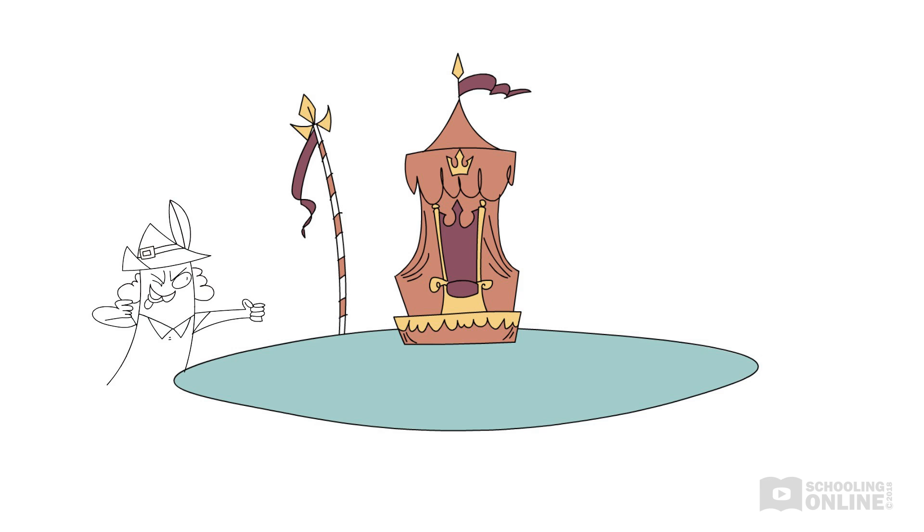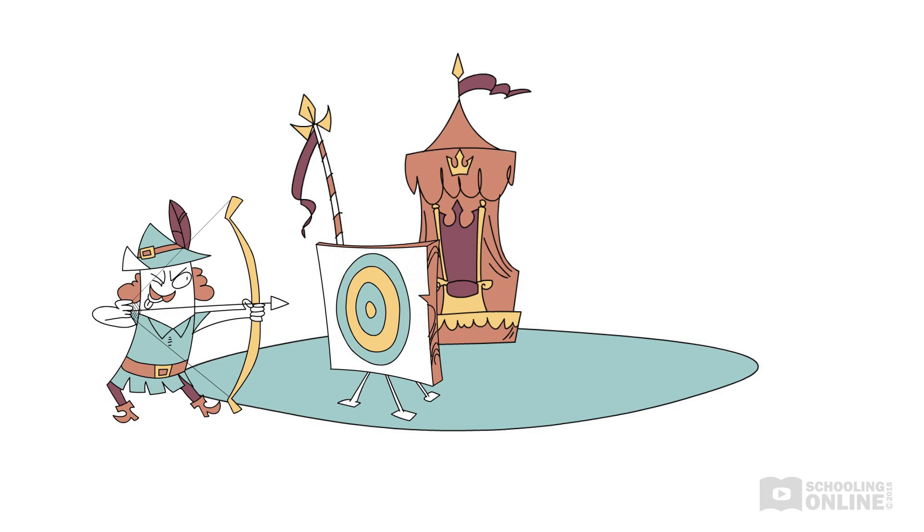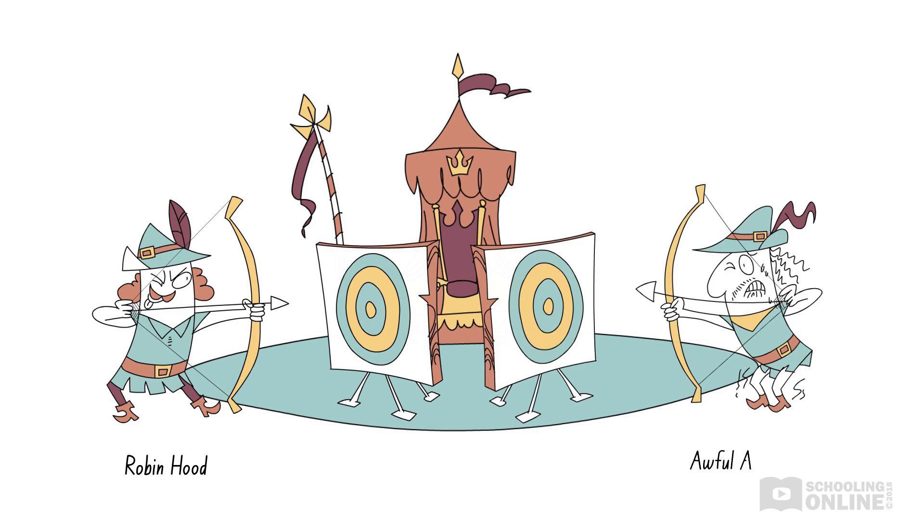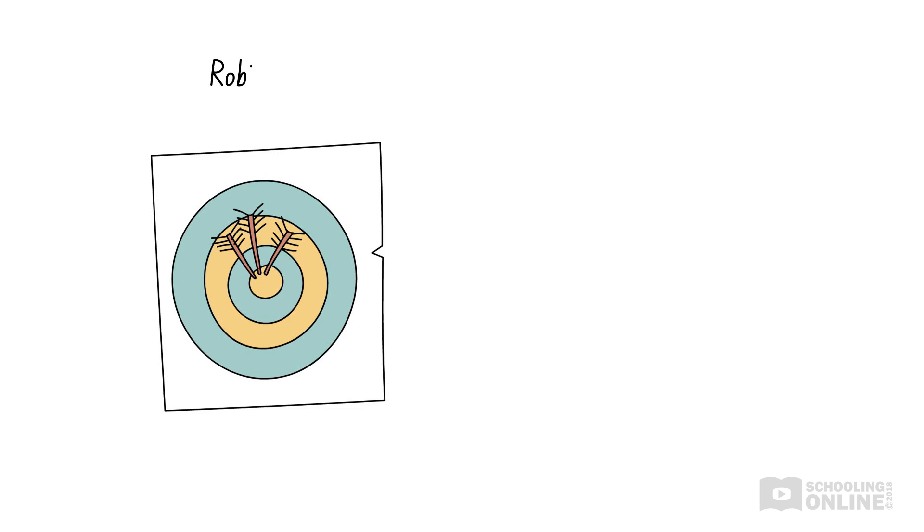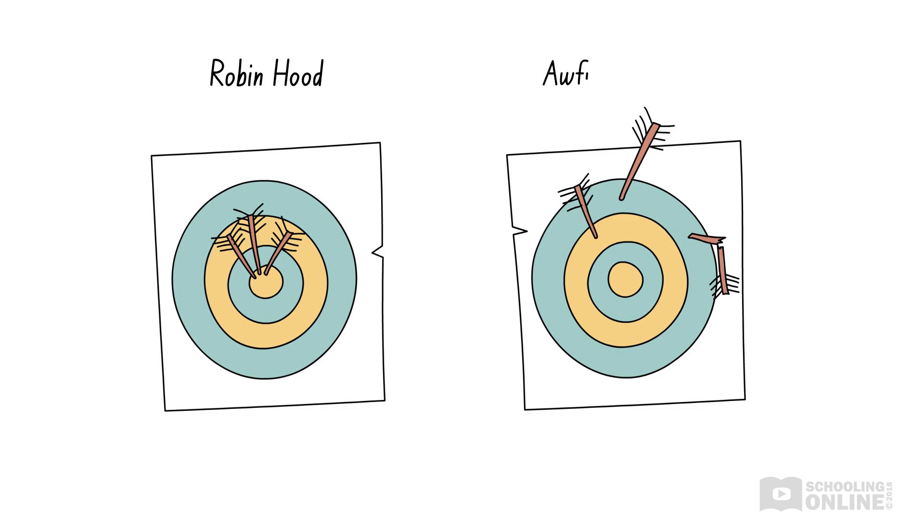Let's consider this through the example of Robin Hood at an archery competition. Robin Hood and his competitor, Awful Aim Adam, each have three arrows to fire at their targets. Naturally, Robin Hood hits the bullseye with each of his three shots, while his competitor's arrows hit the target all over the place. So who is more accurate? It's quite clear that Robin Hood is the more accurate archer, as all his arrows hit the bullseye.